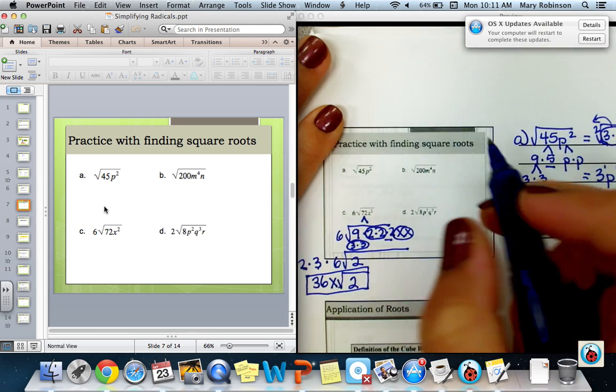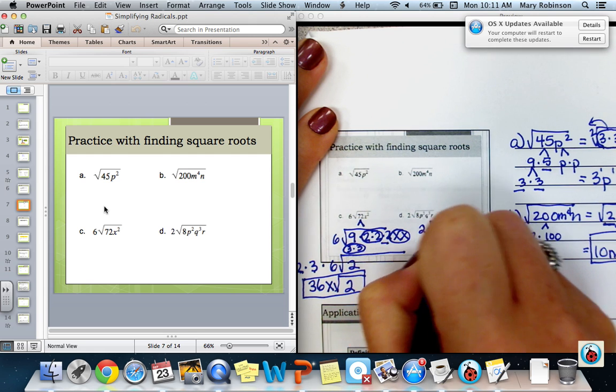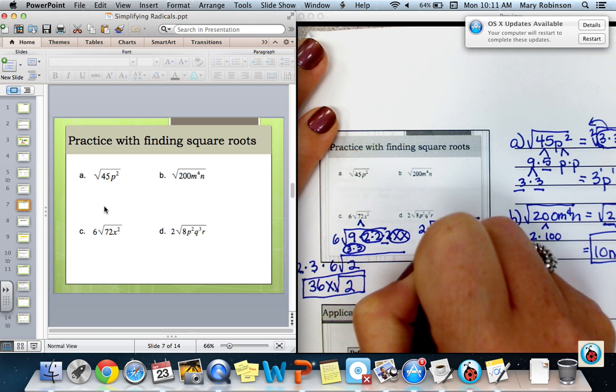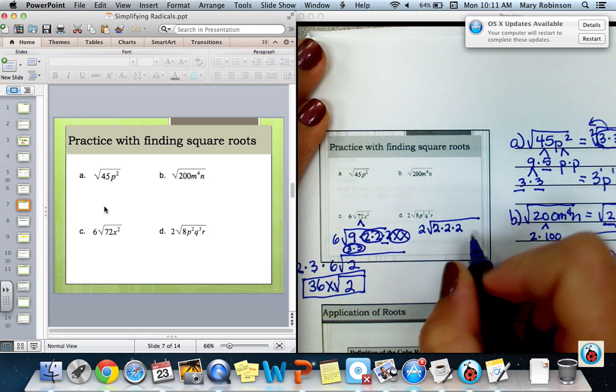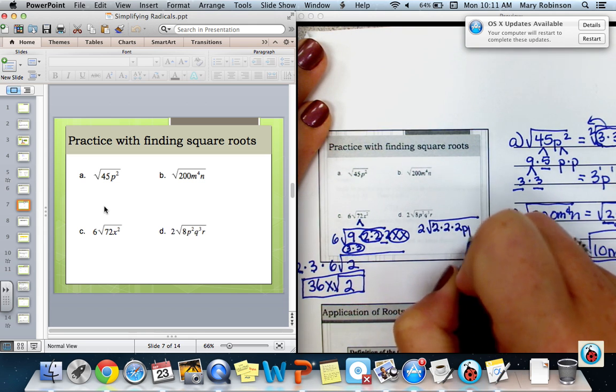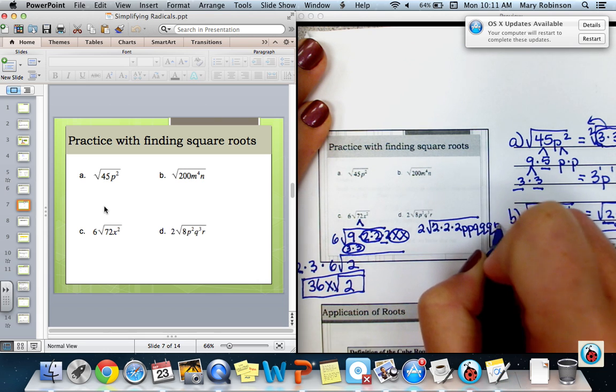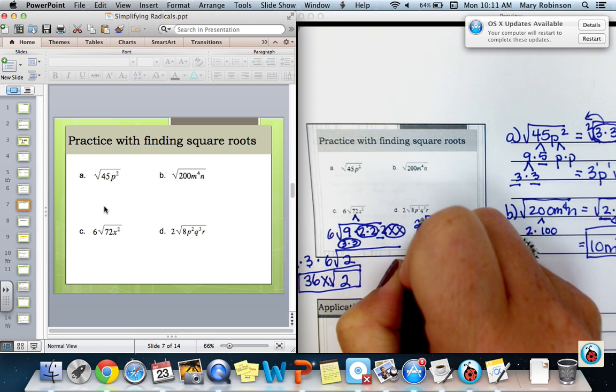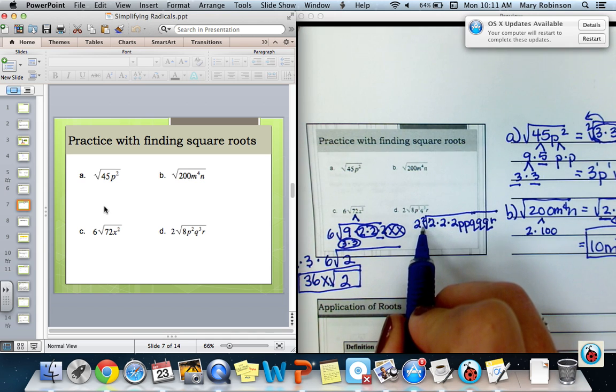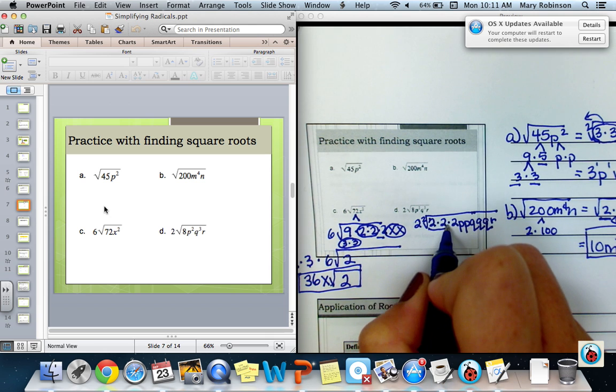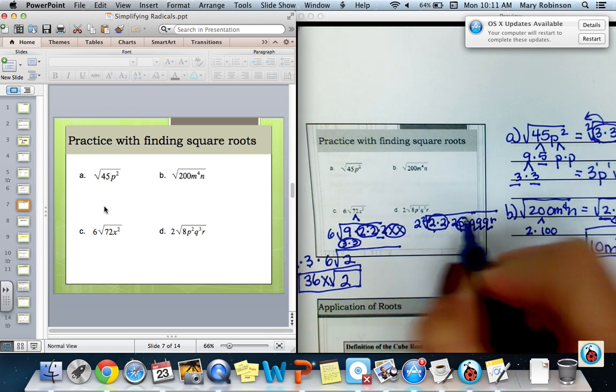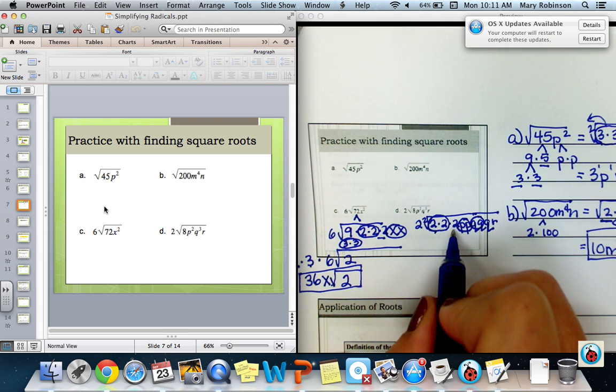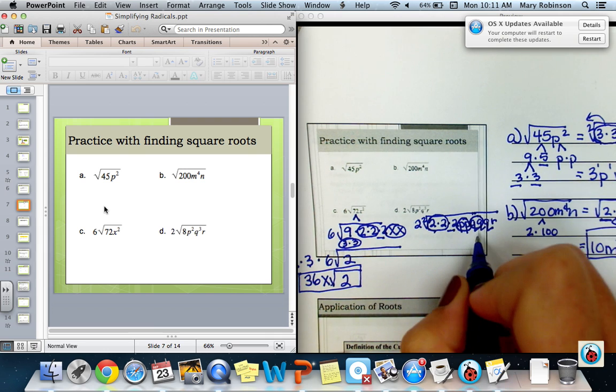Next for D, I have 8, which is 4 times 2, but 4 is 2 times 2. So I have 2 times 2 times 2, 2 P's, 3 Q's, and 1 R. So if I find my groups, knowing that my index is 2, that would give me one group of 2's, one group of P's, one group of Q's.